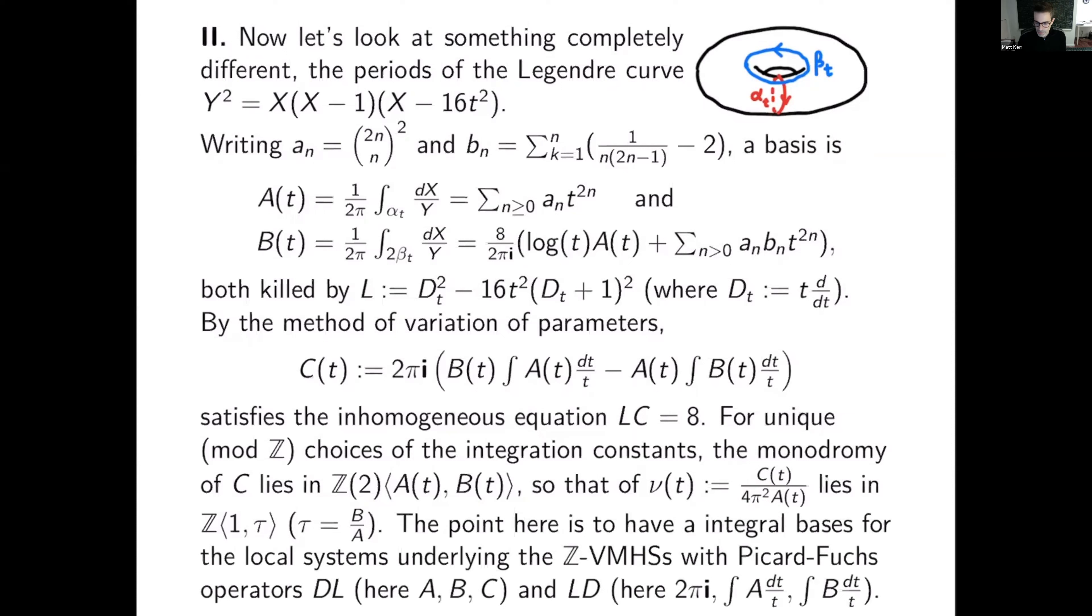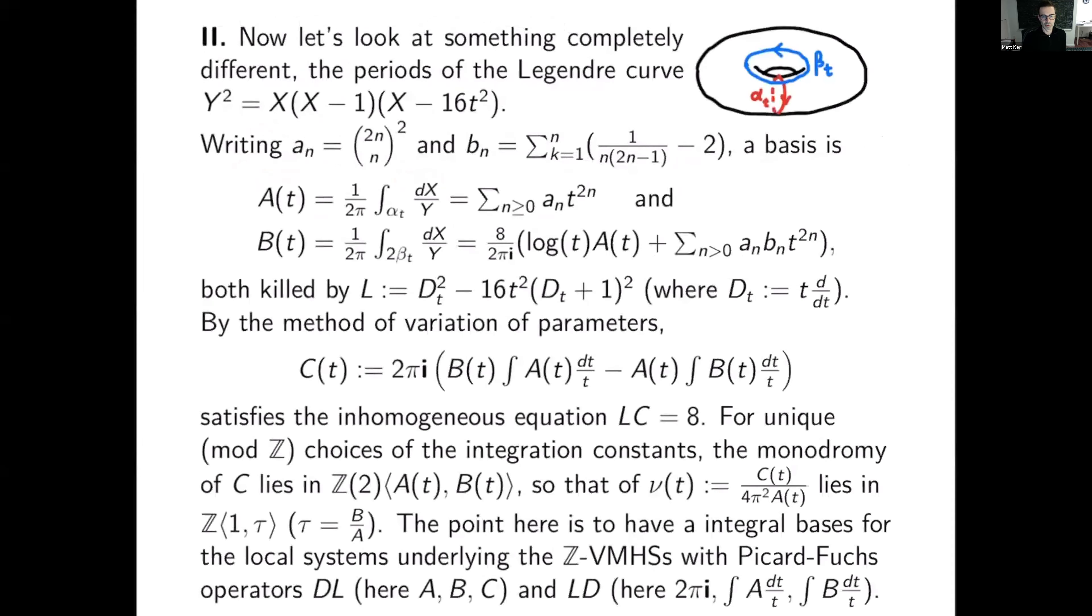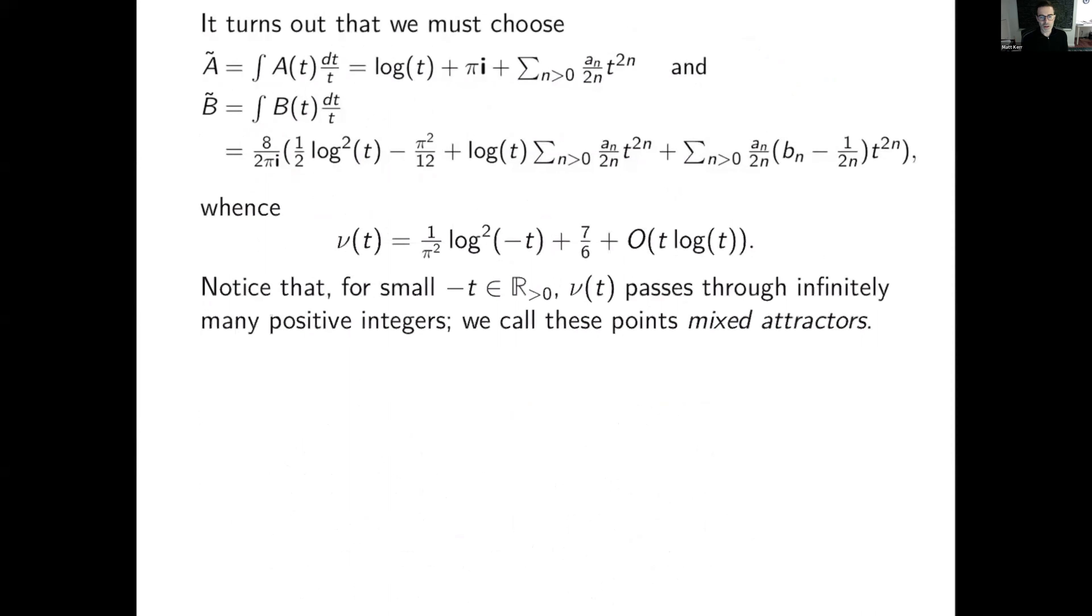Okay, so it turns out that we must choose our constants of integration to be pi i and minus pi squared over 12 times eight over two pi i. That is what works. And from that, you compute this nu. Remember, going back a couple slides, nu was the quotient of this by a times two pi i squared.